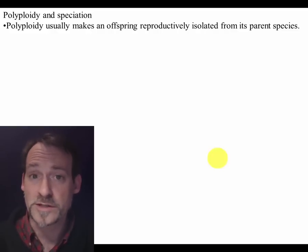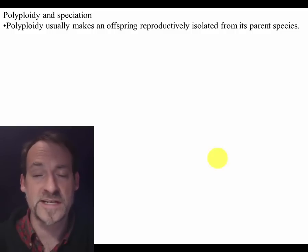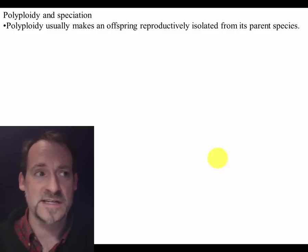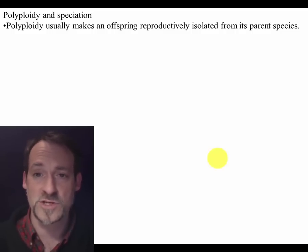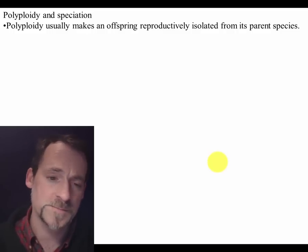A tetraploid is what happens when you take a diploid and double it. So we are diploids, and if a human zygote were formed that had twice the number of chromosomes that we do, it would be a tetraploid.